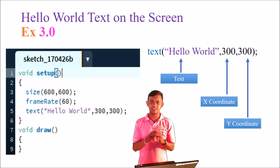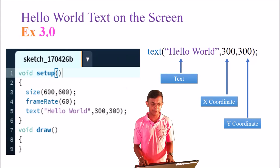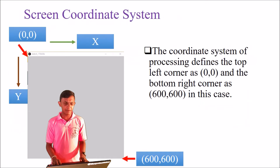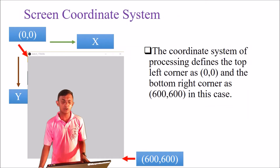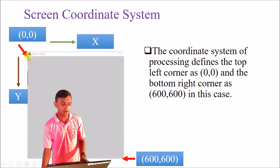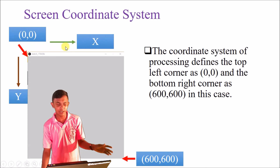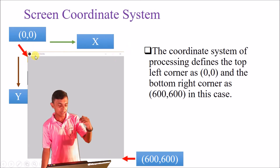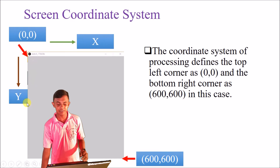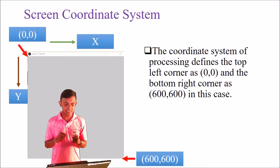Let's move on to the processing environment. Click on the screen coordination system. You'll have origin at 0,0 and the far corner at 600,600. You'll see the X-axis and the Y-axis. This is the coordinate system for Processing.